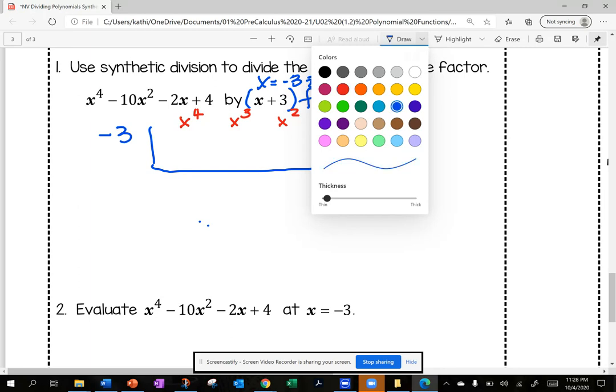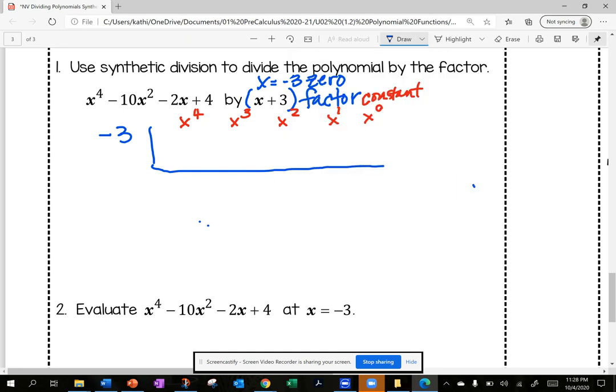Now I'm going to write my coefficients in. The coefficient of x to the 4th is 1. I do not have a coefficient for x cubed, so this is where I'm filling in with a 0 for the missing coefficient. x squared is negative 10. x to the 1st is negative 2. And the constant is 4.